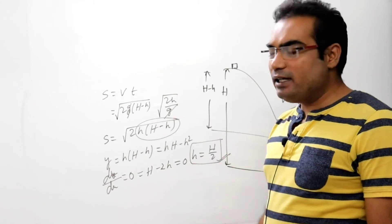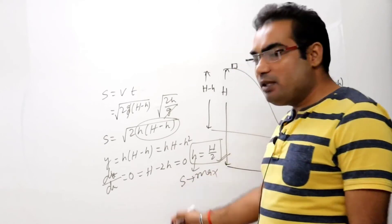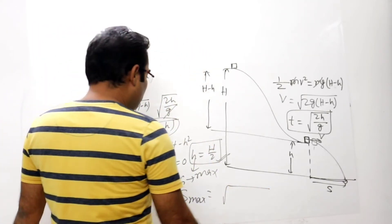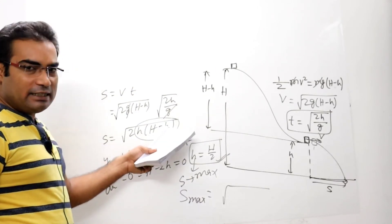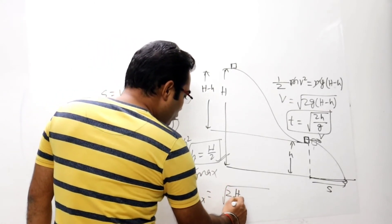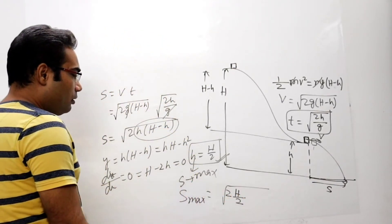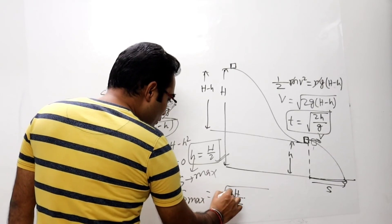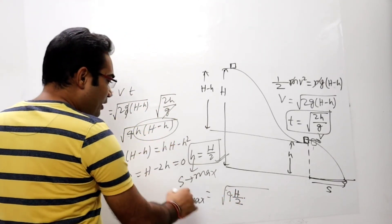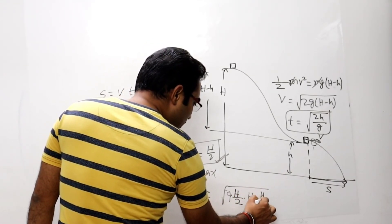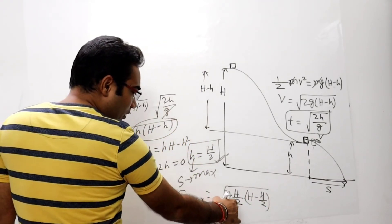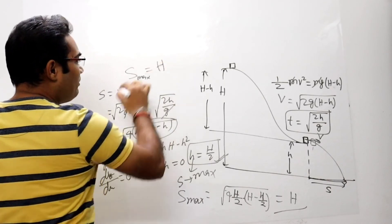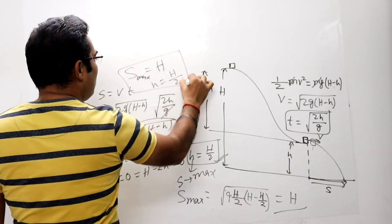यदि small h का value capital H/2 हो जाए तो S maximum होगा। Maximum S का value calculate करते हैं: small h की जगह H/2 put करने पर S_max = √(2 × (H/2) × (H − H/2)) = √(2 × H/2 × H/2) = √(H²/2)... जो कि capital H के बराबर आएगा। तो S maximum = H, और small h का value H/2 — यानी half of the height — होना चाहिए।